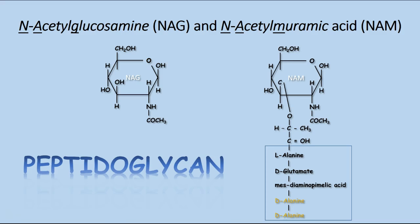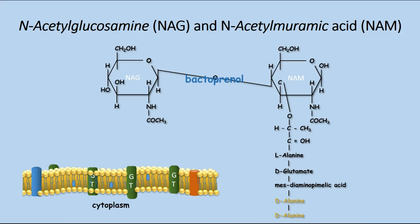NAM is covalently linked to a pentapeptide — five amino acids. The sequence of these five amino acids will vary between different species of bacteria, but they will all end in two D-alanines. The only exception is when the final D-alanine is replaced by D-lactate. The two sugars, NAG and NAM, are made inside the cell and then transported to the cell membrane by the molecule bactoprenol, where they are covalently linked to each other before being transported across the membrane and outside the cell.